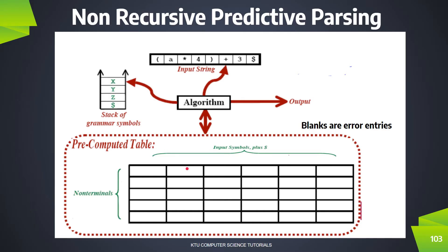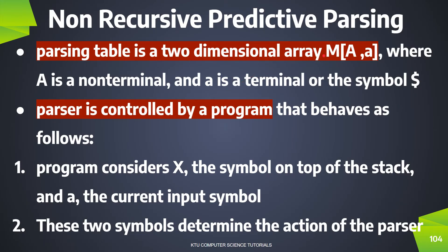In this table, we have entries in the parsing table. We don't have an entry for every cell. If we take a blank, there will be an error entry. We are learning the construction of the parsing table. We have three components: the stack of grammar symbols, the input string followed by the dollar symbol, and the two-dimensional parsing table. The row is the non-terminal and the column is the corresponding table entry.